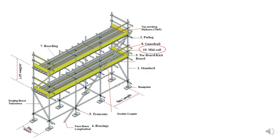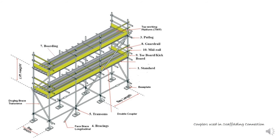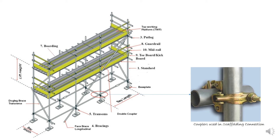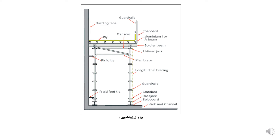In the case of steel scaffoldings, special connections are required to connect standards, ledgers, and other members, unlike nails and ropes in timber scaffolds. This includes couplers — fittings used to join the various components of a scaffold together. Then we have scaffold ties, used to secure the scaffold to other structures. The figure shows the scaffolds tied to the wall using rigid ties at the top and bottom.